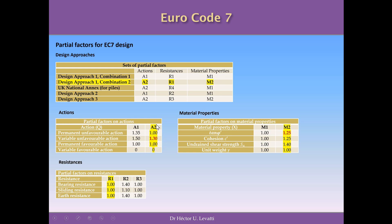For actions we use the second column of the table, for materials we use the second column, and for resistances we use the first column. For geotechnical problems under R1, which applies to Design Approach 1 Combination 2, all resistance coefficients are equal to 1, so there will be no change in terms of resistances in our calculations.